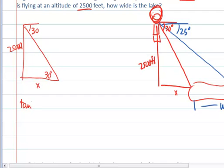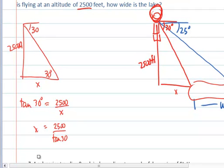That's going to be the tangent ratio of 30 degrees equals 2,500 over x. You just switch diagonals. And your x value would be 2,500 divided by the tangent of 30. And I get 4,330 feet.